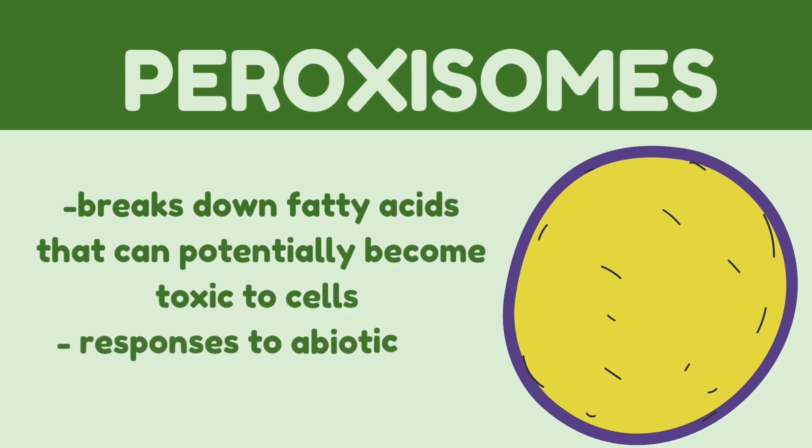Moving on to the peroxisome: peroxisomes break down fatty acids that can potentially become toxic to the cell and convert these toxins to oxygen and water. Peroxisomes act to defend the cell. Plant peroxisomes are also involved in numerous processes including primary and secondary metabolism, development, and responses to abiotic and biotic stresses.